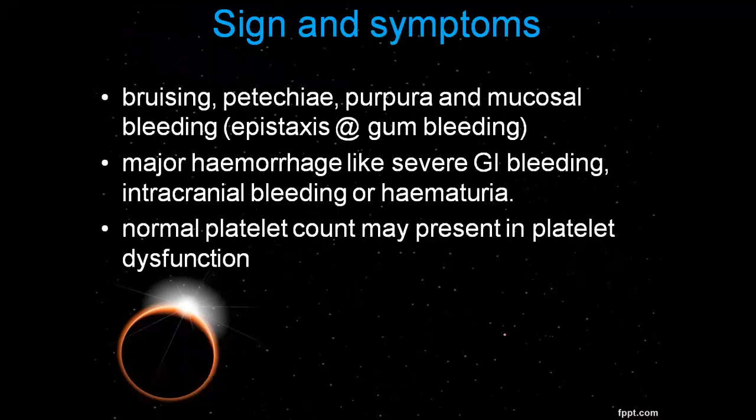Signs and symptoms of thrombocytopenia include mucosal bleeding, hemorrhage, and GI bleeding. Normal platelet count may still present in cases of platelet dysfunction.